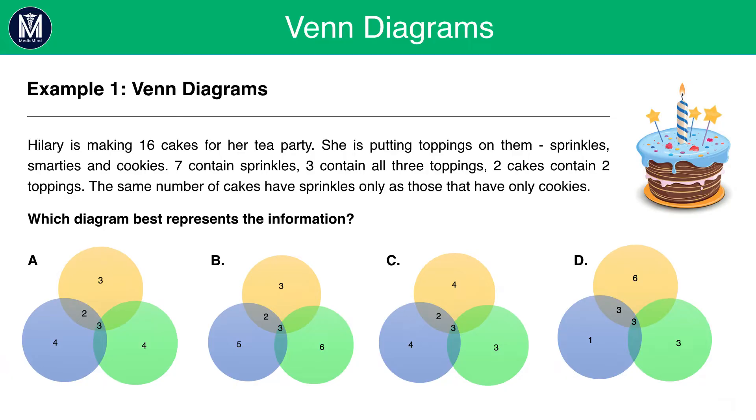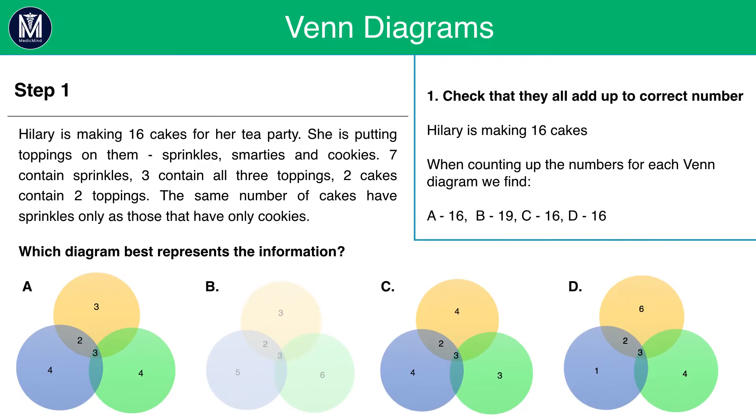So as I mentioned before, this question will require you to look at Venn diagrams and it might even be easier to draw your own Venn diagram here. But let's start by using the process of elimination. The first thing we are told is that she is making 16 cakes for her tea party. So we should check that they all add up to the correct number. If we look at A, it adds up to 16. If we look at C, it adds up to 16. If we look at D, it also adds up to 16. But B adds up to 19. That means we can rule that out.